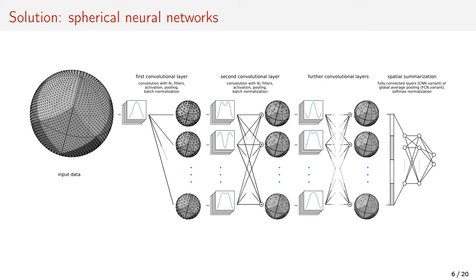Spherical neural networks are like classical CNNs with convolutions, pooling, and linearities. The difference is that 2D convolutions are replaced by spherical convolutions.